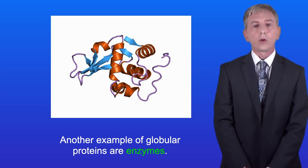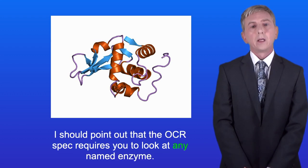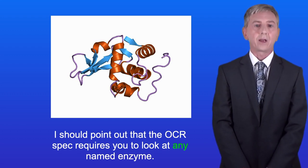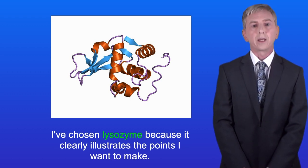Another example of globular proteins are enzymes. We're going to look at the enzyme lysozyme. The OCR spec requires you to look at any named enzyme. I've chosen lysozyme because it clearly illustrates the points I want to make.